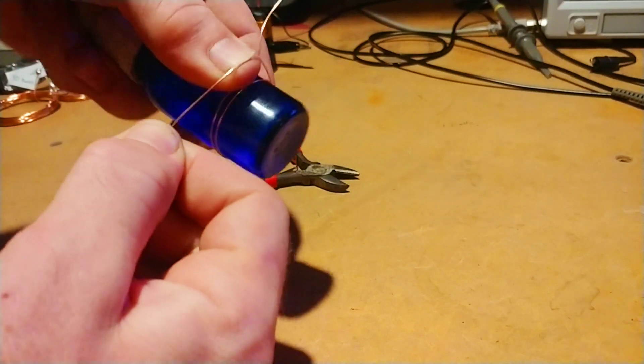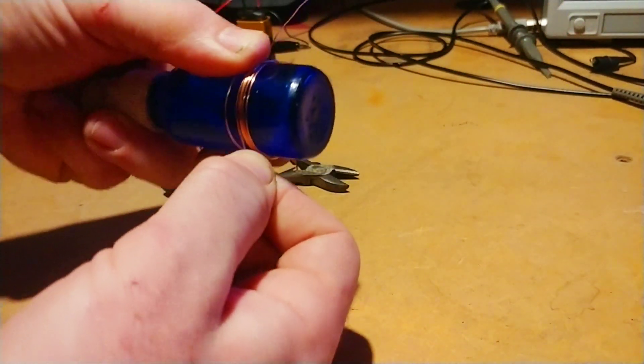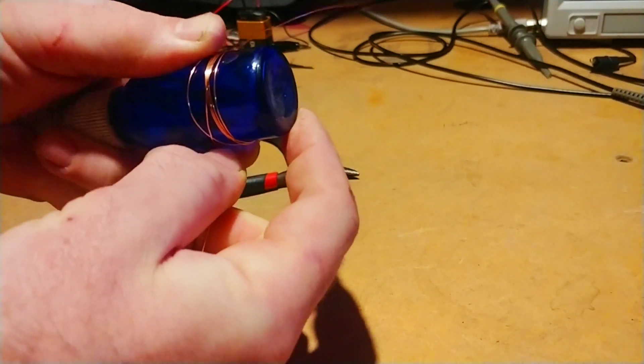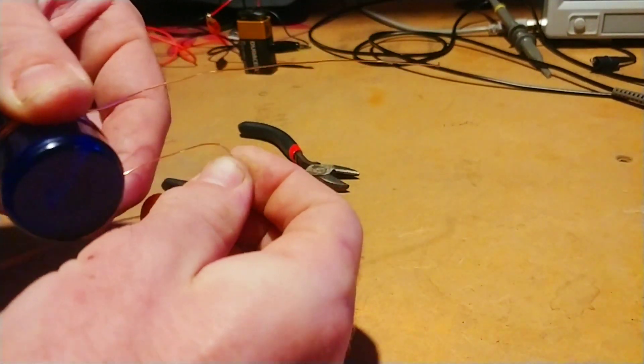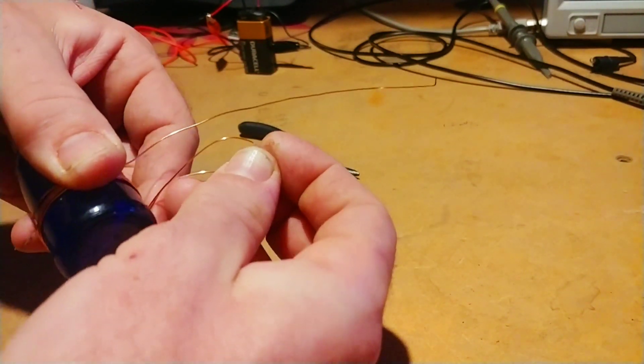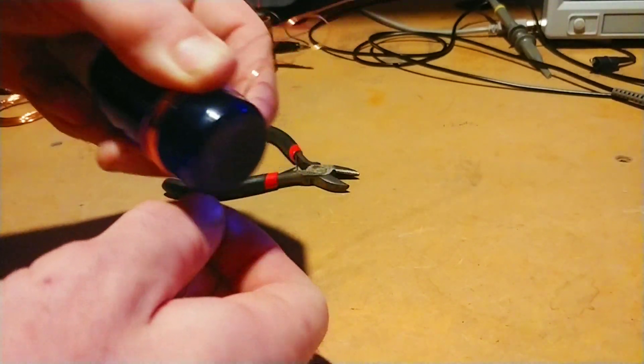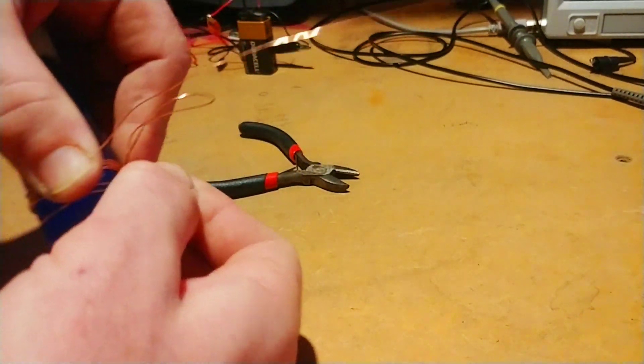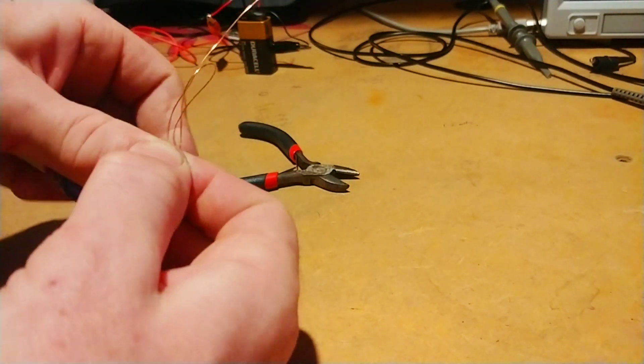We're going to wrap around once, two, three, four, five. I'm going to do a 10-turn coil. However many turns you do, you want to make a center tap halfway through. So I'm just going to make a loop. That's our center tap. And then just continue winding, six, seven, eight, nine, ten.